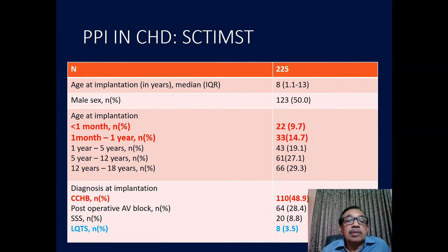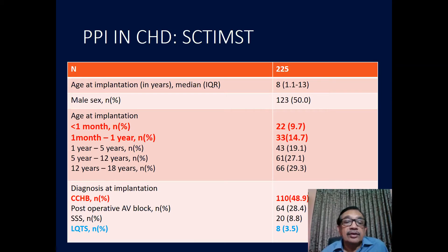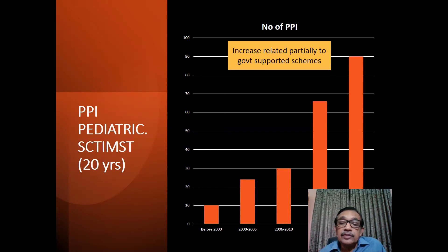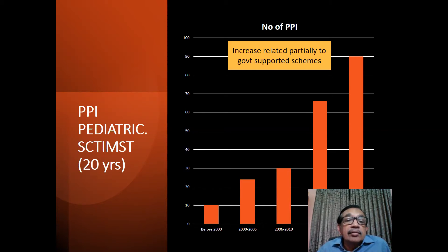We looked at our data of pacemaker implantation in congenital heart disease at our center, which is a major center in the south. We had about 225 patients over about 20 years. Age at implantation was 8 years, 50% were males, less than one month we had 22 children and one month to one year 33. The main diagnosis at implantation was congenital complete heart block in 50% of patients. There is a sudden increase in the number of implants after 2010, which is not related to changing guidelines but more related to the appearance of government-supported schemes, indicating that economic support plays an important role in pacemaker implants.